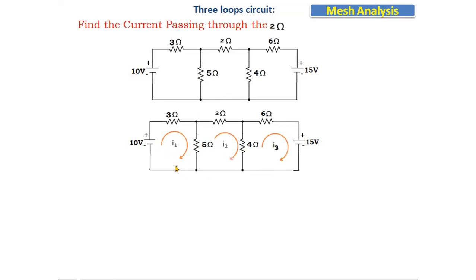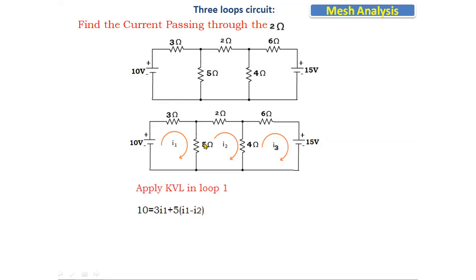Assuming current flowing in each loop is clockwise: I1 in loop one, I2 in loop two, and I3 in loop three. Applying KVL in loop one, we get: 10 equals 3·I1 for the 3Ω resistor, plus 5·(I1 − I2) for the 5Ω resistor, which is common to loop one and loop two, with I1 and I2 flowing in opposite directions. Simplifying: 8·I1 − 5·I2 = 10. This is equation number one.